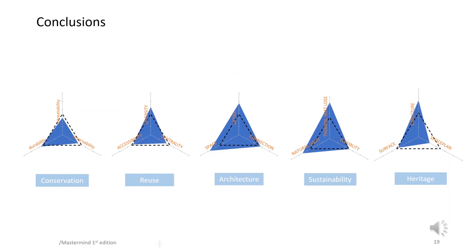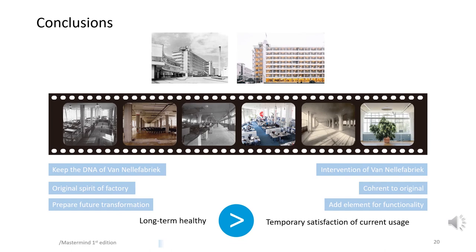For each domain, the assessment will be a three-fold evaluation with equal respect to the chosen indicators. From these graphs, we were able to tell that the architect strived to keep the DNA of the factory, while with great concern to prepare the building for possible future transformation. Therefore, the restoration was coherent to its origin and such unacceptable compromises were made. It is rather professional, since first priority of any heritage restoration should always be the long-term healthy being, instead of the temporary satisfaction of current use.